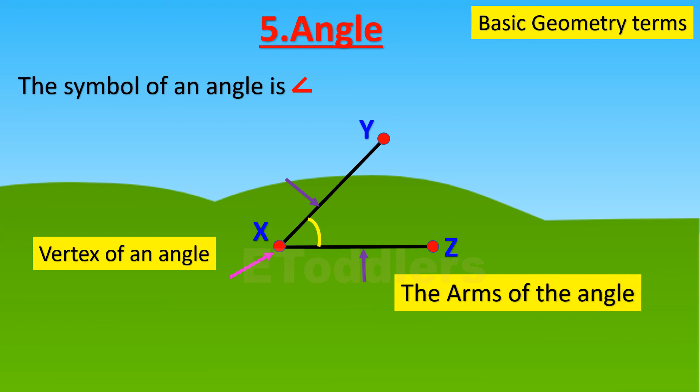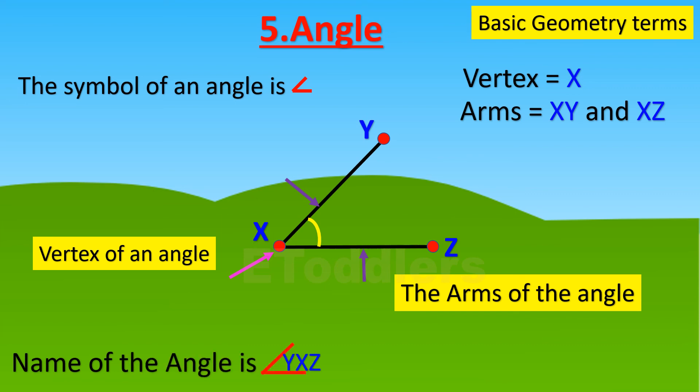In this angle, the vertex is X. The arms are XY and XZ. The name of the angle is angle YXZ or angle ZXY.